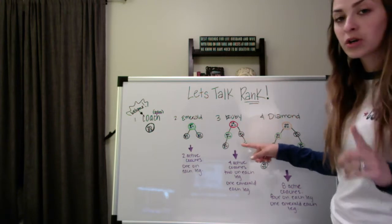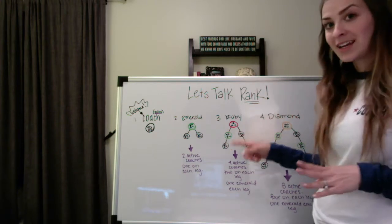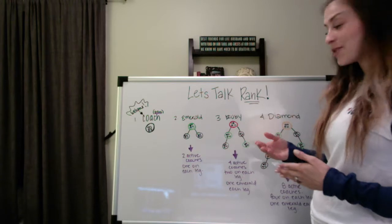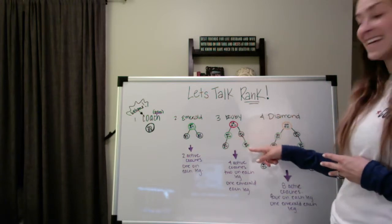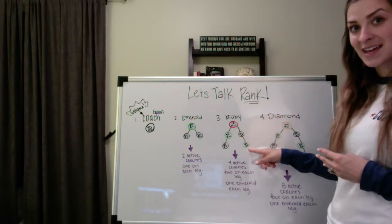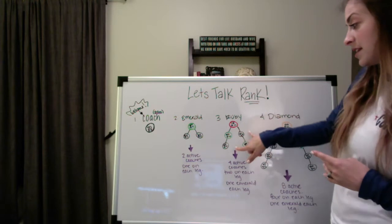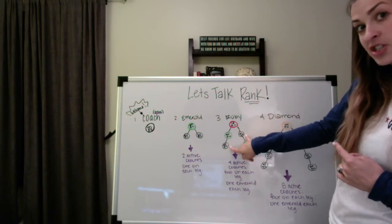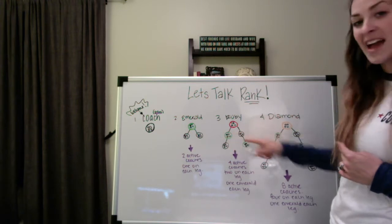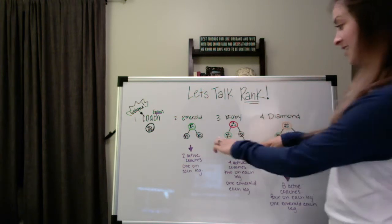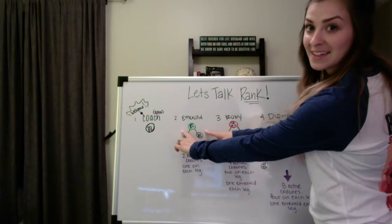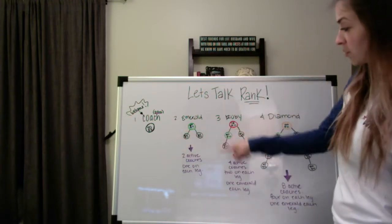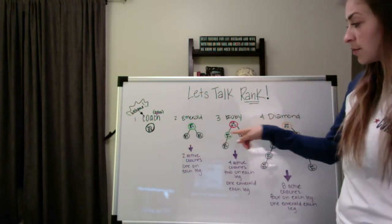Now, two of these four coaches have to be an Emerald and they also have to be on either side of your business legs. So that means that these two coaches here are active and it's just them, but these two coaches here have two under them as well. These two coaches look like this. And when everyone's active, all four, your two Emeralds, you are a Ruby coach.